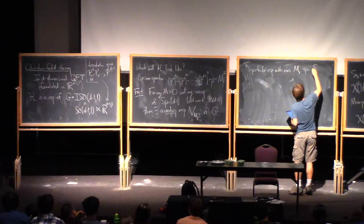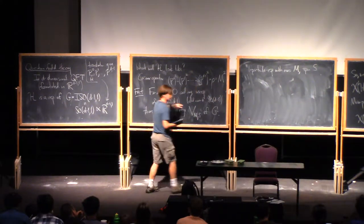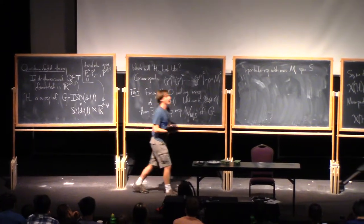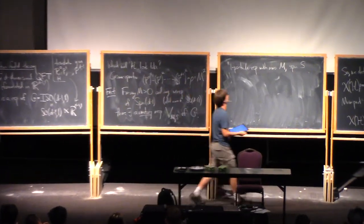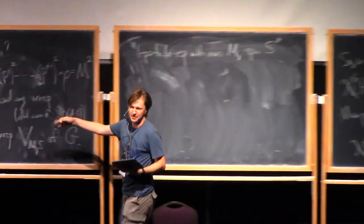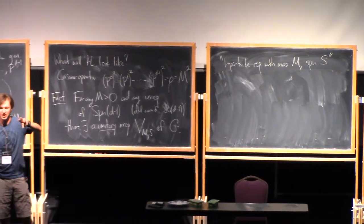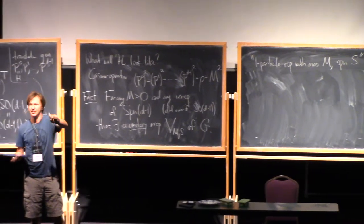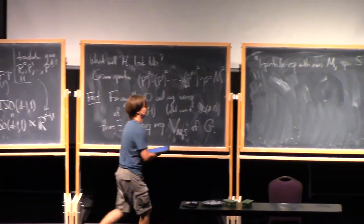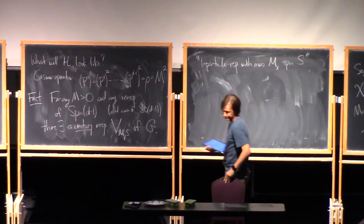In general, spin is given by a representation exactly of this group — the rotations of space, which in this case is SO(d-1), or Spin(d-1). So that's how you're supposed to think about this representation. In the Hilbert space, there's going to be a bunch of different representations that represent states of just one particle. Maybe I should draw a little picture of what the Hilbert space is going to look like.